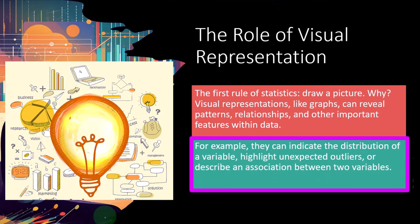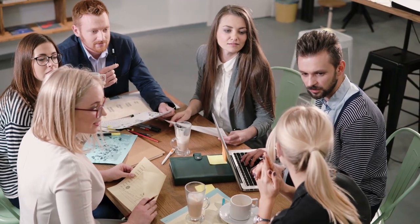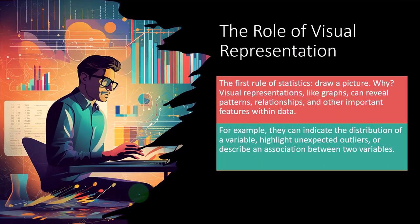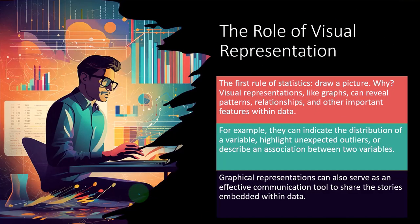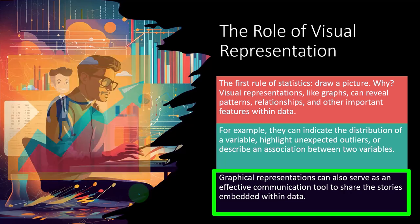So for example, they can indicate the distribution of a variable, highlight unexpected outliers, or describe an association between two variables. These are often things that we're looking for within the data. We want to know the midpoint of the data. We want to know the distribution of the data. We want to know the general shape of the data. And we would like to possibly know if that data may have a correlation to other points of interest that can help us make a better story or predictions about things. So graphical representations can also serve as an effective communication tool to share the stories embedded within data.